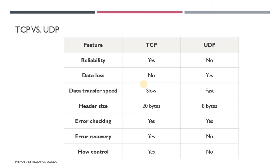In UDP, no error correction or flow control is provided, which is why the speed of communication is faster than TCP. While in TCP, reliability is provided, and if data packets are lost, they are retransmitted, so the speed of communication is less than UDP.